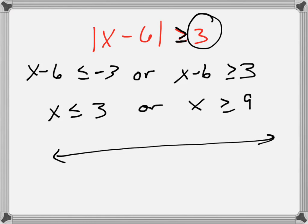X is less than or equal to 3 means starting at 3 with a closed circle and going left. X is greater than or equal to 9 means starting at 9 with a closed circle and going right.